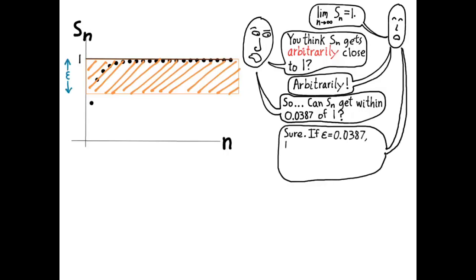If epsilon equals 0.0387, then set N equal to 2. So, this is epsilon. He says, if epsilon is set to 0.0387, then he sets the number capital N to 2. And he says, for all little n greater than or equal to capital N, in other words, everywhere here and to the right of it, A sub N, the y-coordinate of these points, would be within epsilon of 1. So, he met the challenge. He found a value of capital N that satisfies the condition that everywhere there and to the right of it, the sequence goes inside the envelope.